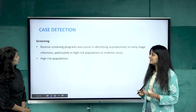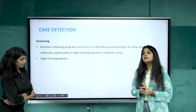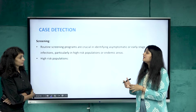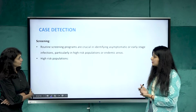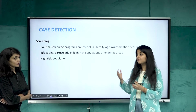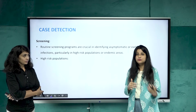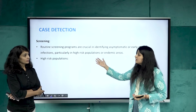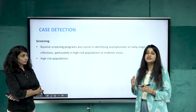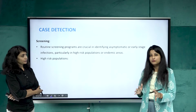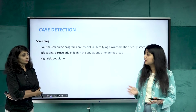Case detection primarily involves screening. We organize routine screening programs to detect persons in the asymptomatic stage. High-risk populations include pregnant females — who get VDRL done at OPD — blood donors, and commercial sex workers indulging in unsafe sexual practices. The purpose of screening is early case detection and providing timely treatment.